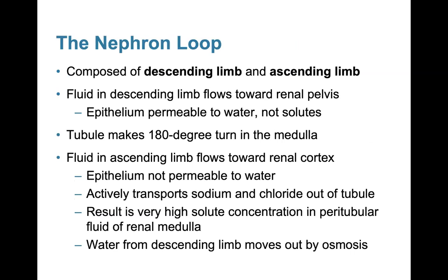The nephron loop is composed of a descending and ascending limb. Fluid in the descending limb flows toward the renal pelvis; the epithelium is permeable to water but not solids, so only water moves. The tubule makes a 180-degree turn in the medulla, and fluid in the ascending limb flows back toward the renal cortex. In the ascending limb, the epithelium is not permeable to water, but it actively transports sodium and chloride out of the tubule. This results in very high solid concentration in the peritubular fluid of the renal medulla, and water from the descending limb moves out by osmosis.